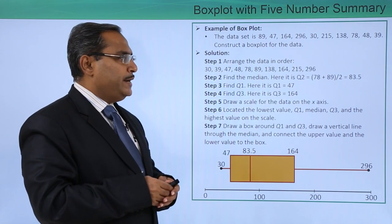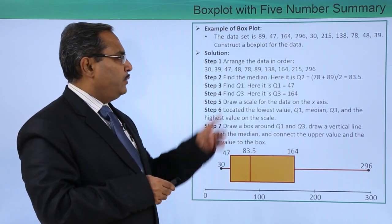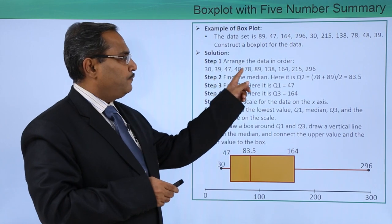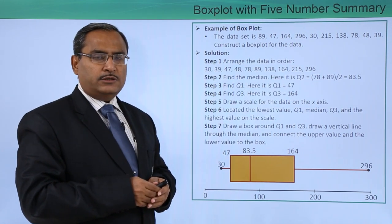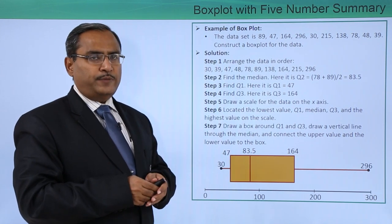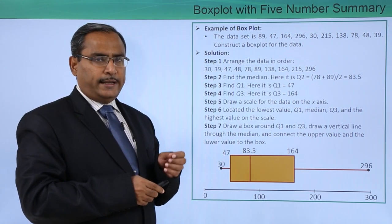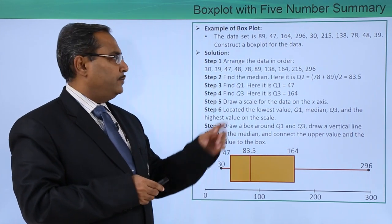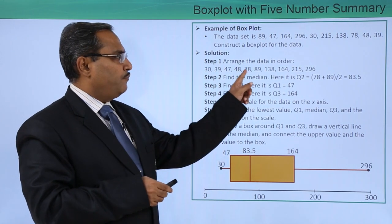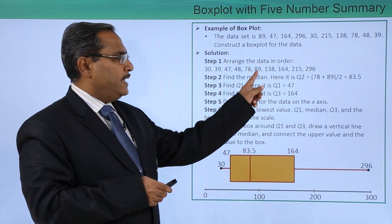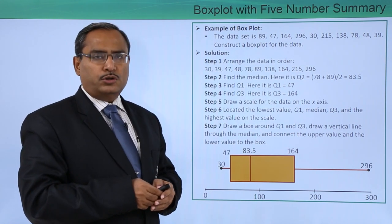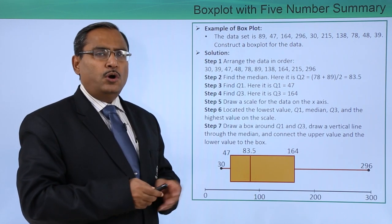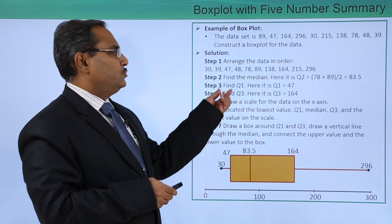Now step 2: find the median. We know that here we are having 1, 2, 3, 4, 5, 6, 7, 8, 9, 10 data. So 10 is even. I cannot find the middle most value. In that case I shall be taking the average of the fifth and sixth value. So 1, 2, 3, 4, 5, so 78 and 89, that average will be the respective median, also represented by Q2 or the second quartile.